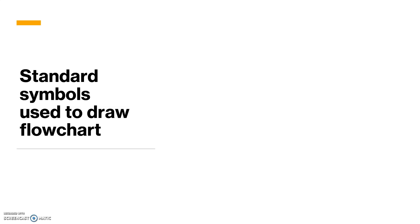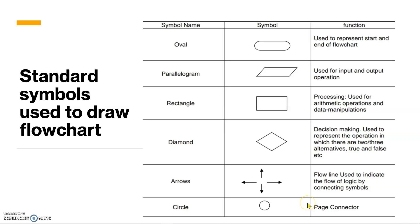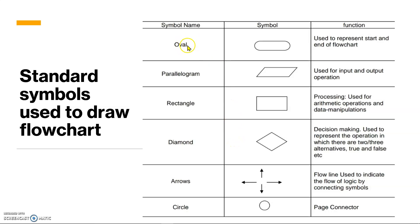We can define a flowchart as a diagrammatic or graphic representation that shows the sequence of steps to be followed to get the solution to your problem. There should be standard symbols used to draw the flowchart. The oval shape is used to represent the start and end of your flowchart. The parallelogram is used for taking input and producing output. The rectangle is used for processing — all data manipulation and operations you are going to perform.